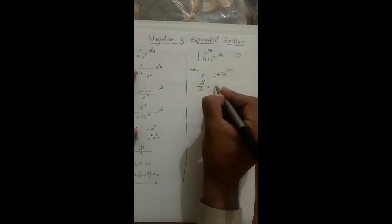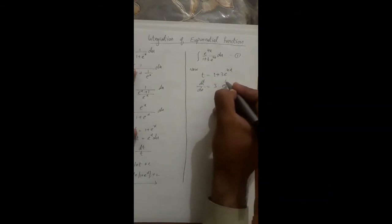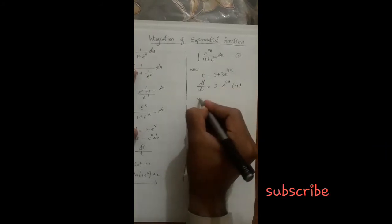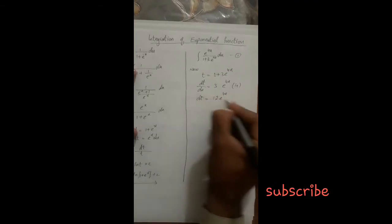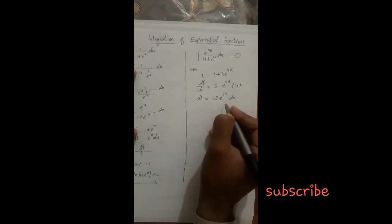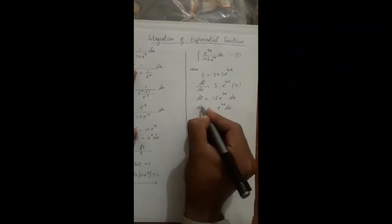Differentiating: the derivative of 1 is zero, 3 is constant, the derivative of e^(4x) is e^(4x) multiplied by the derivative of 4x, which is 4. So dt equals 3 times 4 equals 12, giving dt equals 12 e^(4x) dx. Therefore e^(4x) dx equals dt divided by 12.